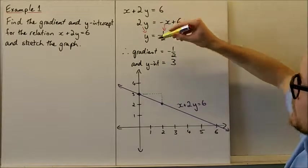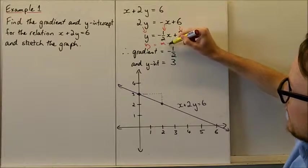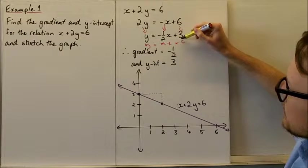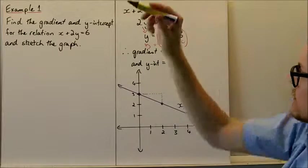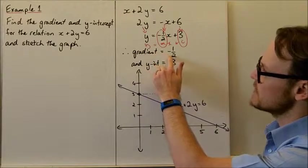Now it's in the format y equals mx plus c, and we can see that m is our gradient, and c is our y-intercept. Our gradient is negative one-half, and our y-intercept is 3.